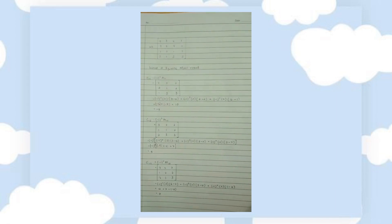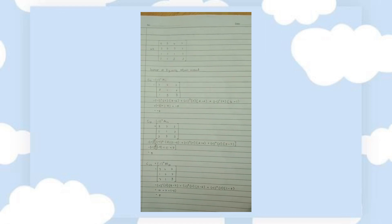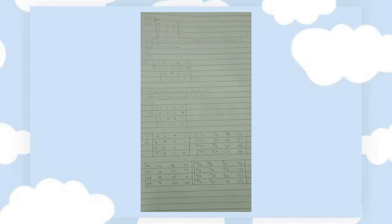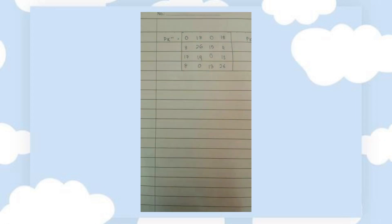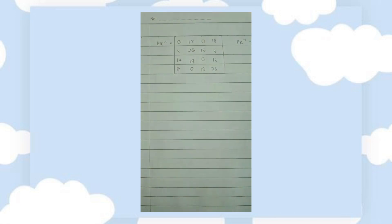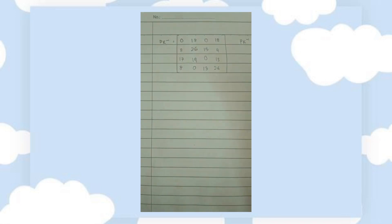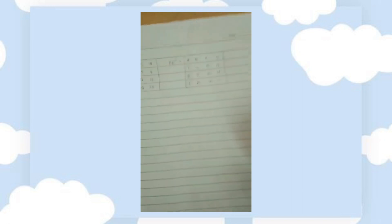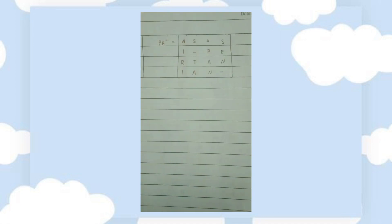For the third test, either the ERO method or the adjoint method can be used to find the inverse of K3. The adjoint method is used here, which is similar to the method used for K1. After getting the inverse of K3, the result is multiplied with the P matrix given by the brothers to find the hidden message. After converting the result using the given password, the message behind the order of truth is decoded as 'asasi pertanya'.